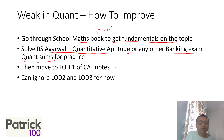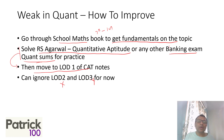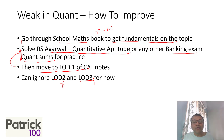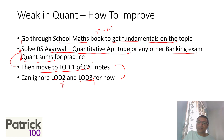Once you finish that, move to the LOD1 sums in the CAT notes. Ignore LOD2 and LOD3 for now. In the actual exam, your aim is to clear the cutoff — out of around 34 questions, you may just pick up 6 or 7 and manage to clear the 80 percentile cutoff. So the key is to focus on easy sums, learn how to pick them up and solve them, and don't break your head on tough sums. LOD3 is normally not very relevant for CAT. It's okay to solve LOD1 sums from CAT notes right now and come back to LOD2 later.